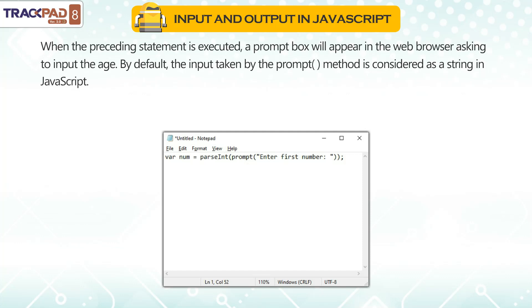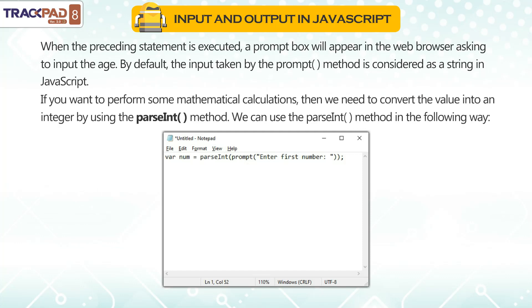By default, the input taken by the prompt() method is considered as a string in Javascript. If you want to perform some mathematical calculations, then we need to convert the value into an integer by using the parseInt() method. We can use the parseInt() method in the following way.